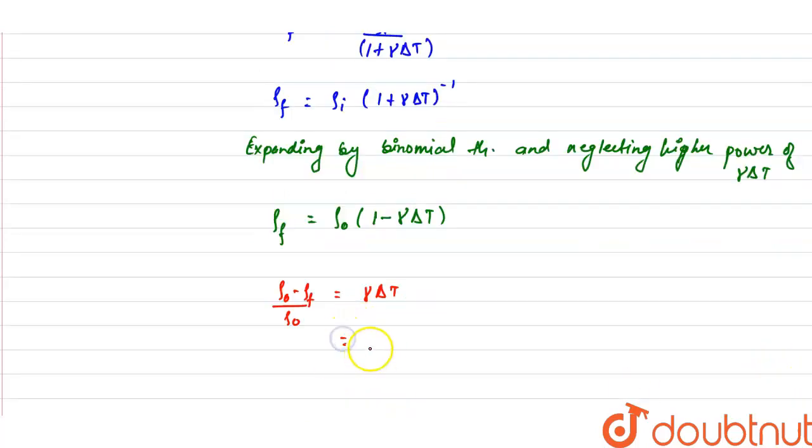Now γ is given to us as 4.9×10^-4 and increment in the temperature is 30. From here we get 0.0147 or approximately we can write it as 0.015.